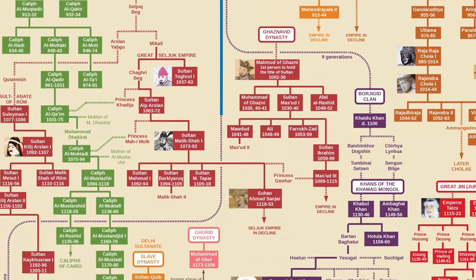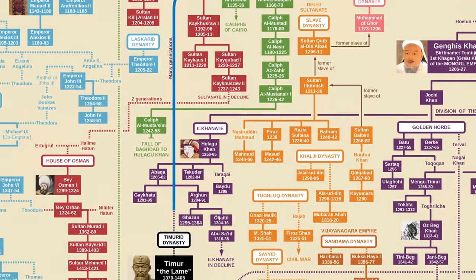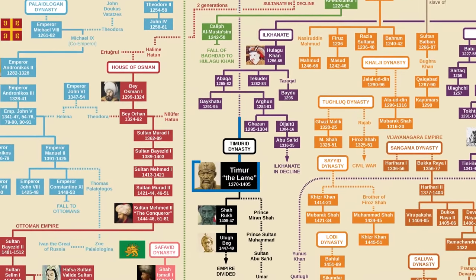Another famous ruler who could trace his ancestry to Bodhunchar was Timur the Lame, who belonged to the Barlaz clan of the Mongols. He wasn't Genghis's descendant but rather a very distant cousin. This remained a source of problems for Timur throughout his life concerning the legitimacy of his rule.